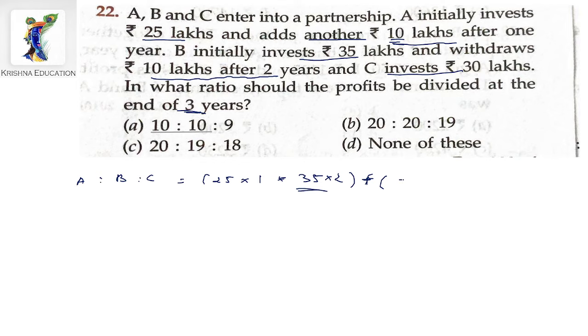B's share: 35 lakhs multiplied by 2 years, then after the withdrawal of 10 lakhs, 25 lakhs multiplied by 1 year.